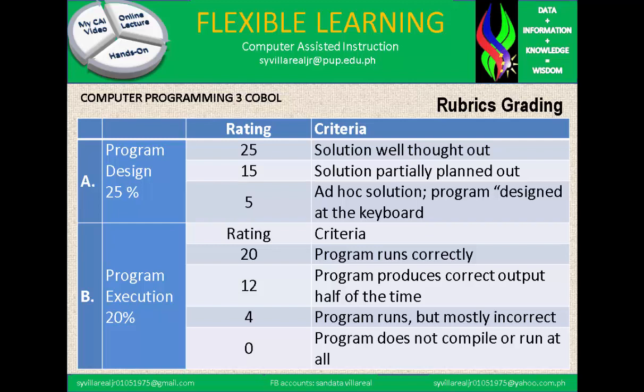Now let's move to the rubrics — the grading system for how to give a score or percentage. A: Program design, 25%. If your solution is well thought out, that is 25. 15 for a solution partially planned out. 5 for an ad hoc solution or program design at the keyboard. B: Program execution, 20%. 20 for when the program runs correctly. 12 for when the program produces correct output half of the time. 4 for program runs but mostly incorrectly. And 0 when the program does not compile or run at all.